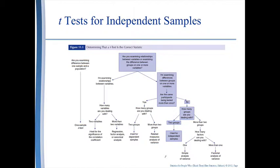Salkind has titled this chapter 'T for 2,' making reference not to the little song but to the number 2. T-tests are the test of two groups. Perhaps that is the hidden meaning in the use of the letter T for the t-test.